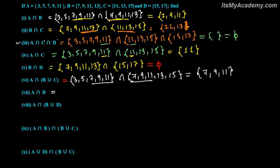Now A intersection D — what is the common between A and D? Nothing. A has 3, 5, 7, 9, 11, and D has 15 and 17. Nothing is matching — these are disjoint sets. So A intersection D is Phi.